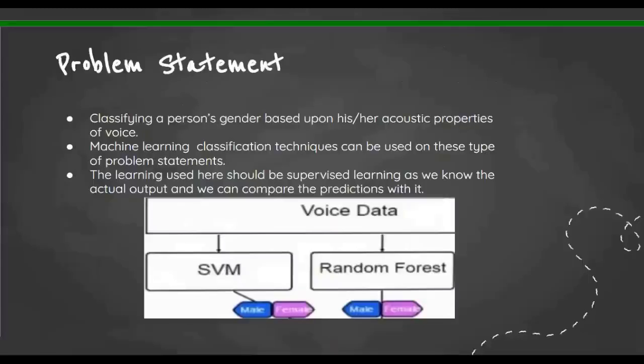These classification techniques are really feasible on these type of problem statements. The learning used over here is supervised, as we all know that what is actual output and we can compare with the predictions. Here you can see how it works: the voice data is passed through the classifiers and then they decide whether the person is male or female.